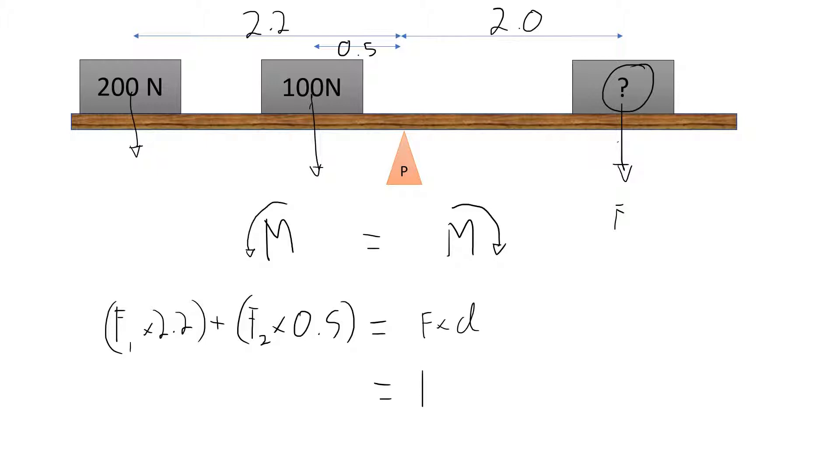So if we have F here, that is 2 meters away. And on this side, we have 200 times 2.2. That's this force up here.